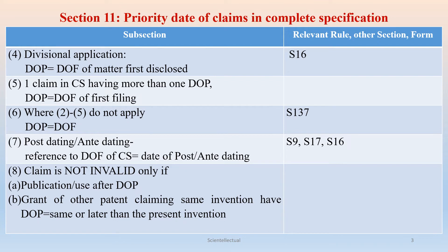Subsection 6: in case subsections 2 to 5 do not apply, then the priority date of a claim will be the date of filing of the complete specification. For example, if an application is filed without any provisional specification — a direct filing of the complete specification — then that direct filing date of the complete specification will be the date of priority.